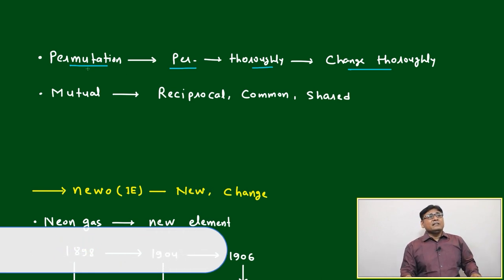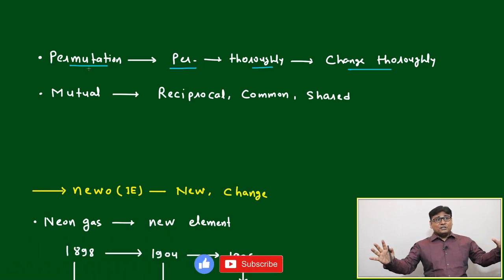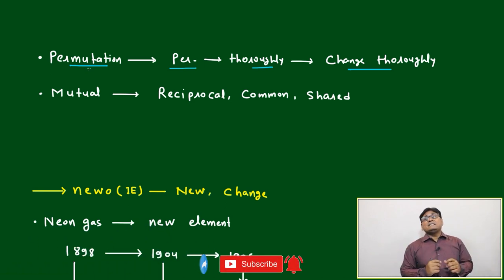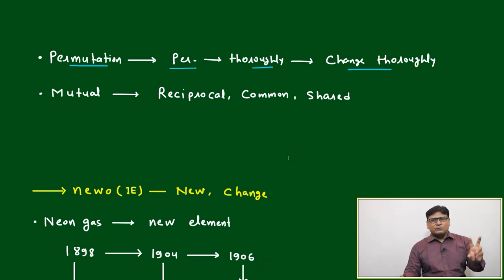Then permutation means all the options thoroughly judged. Like just suppose you are trying to take any of the insurance policy. What you will do? You will go to the internet, you will talk to the insurance two, three agents, and you will gather all the information. And all the permutations you will put: what is my budget, how much I will get the money.